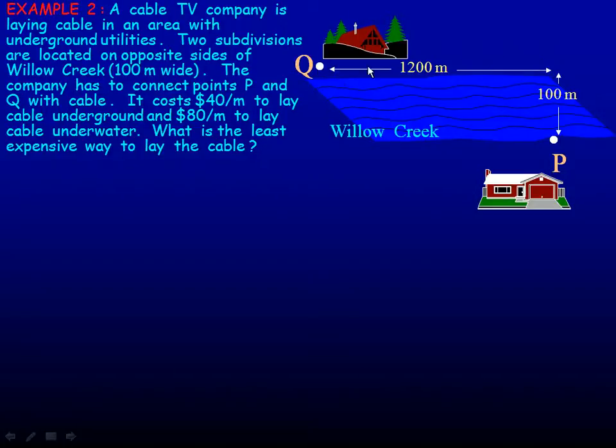So upstream, downstream, there's 1200 meters between them and 100 meters across the creek. So they have to have some distance underwater and potentially some distance under land. And as you might expect, it's cheaper to lay the cable on land than it is underwater. It costs $40 per meter to lay the cable underground and $80 per meter to lay it underwater. So we're asked, what is the least expensive way to lay the cable?